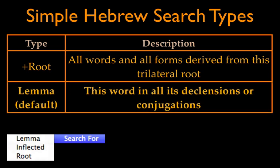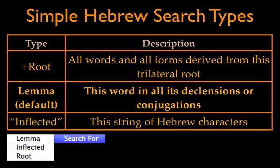The second search is a search for the lemma — the lexical or dictionary form of a word in all of its declensions, if it's a noun, and all of its conjugations, if it's a verb. This is the most common search and Accordance's default. Finally, there is the inflected search, indicated by quote marks around the word.